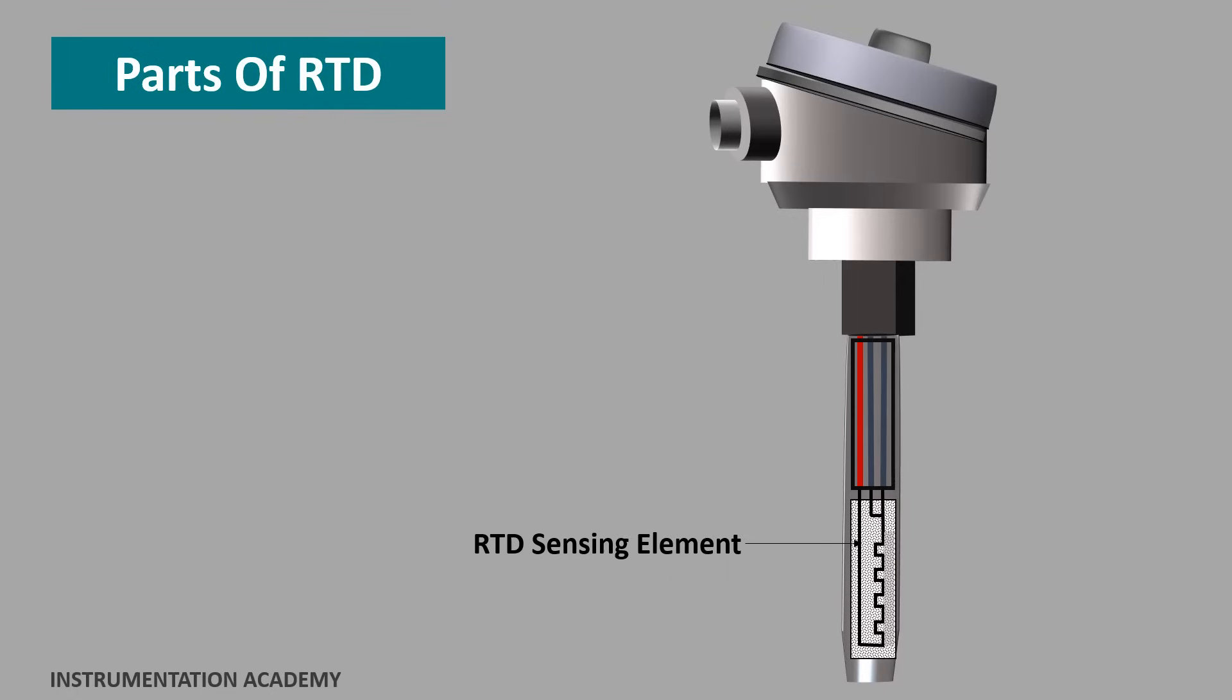Lead wires. Lead wires are attached to the sensing element and then pass through the sensor sheath. Lead wires connect the sensing element either directly to the DCS or to a temperature transmitter connected to a DCS.